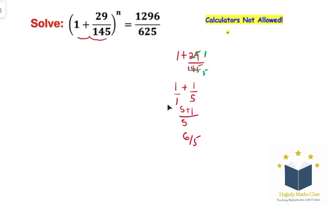So replacing that with this, writing our question we have 6 over 5 to the power of n equals 1296 over 625.